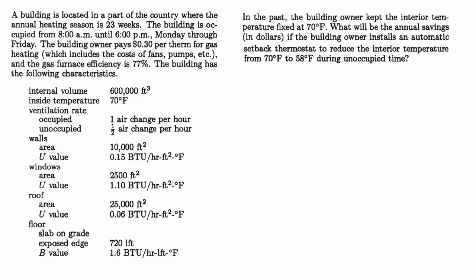A building is located in a part of the country where the annual heating season is 23 weeks. The building is occupied from 8 a.m. to 6 p.m. Monday through Friday. The building owner pays 30 cents per therm for gas heating, which includes the costs of fans, pumps, etc. And the gas furnace efficiency is 77%.